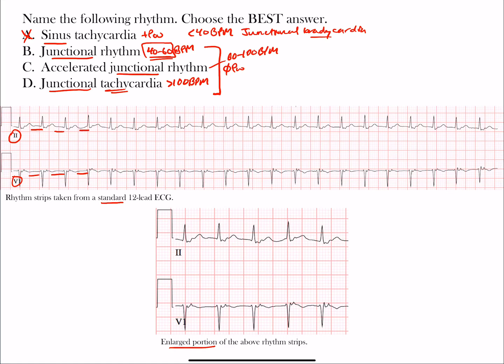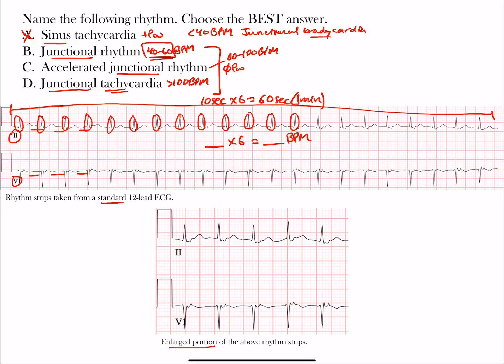We can differentiate these three based on rate. From beginning to end of our standard 12-lead ECG is 10 seconds. Times 6 equals 60 seconds, which is one minute. If we count the complexes across and multiply by 6, we get the rate in beats per minute. Let's count: 1, 2, 3, 4, 5, 6, 7, 8, 9, 10, 11, 12, 13, 14, 15, 16, 17, 18, 19, 20, 21.